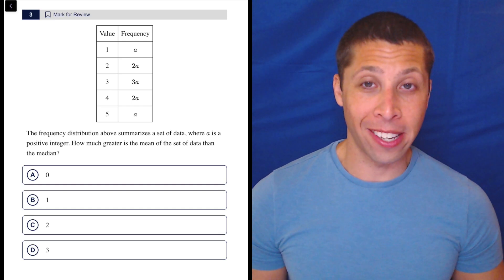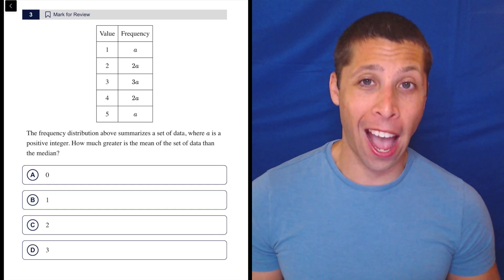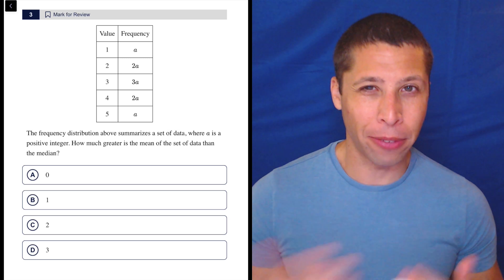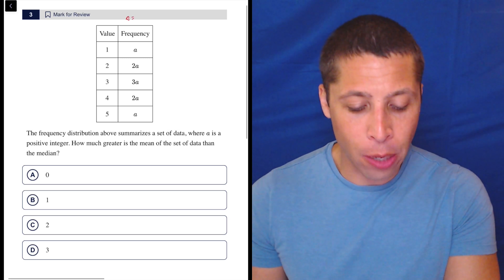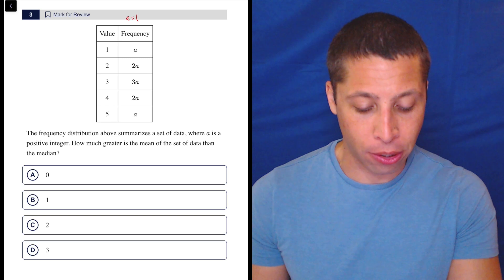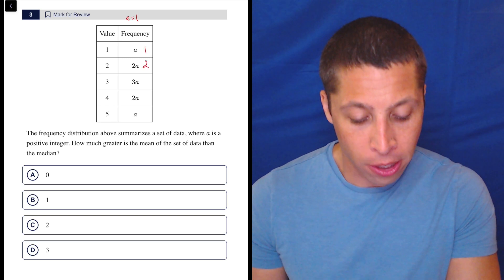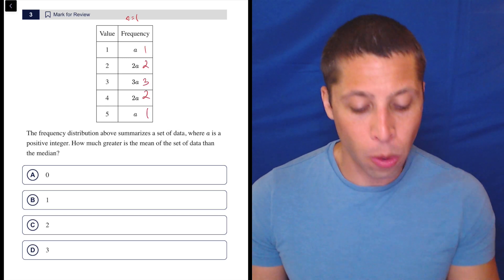The first thing you need to be doing on a question like this is making the frequency chart look like an actual frequency chart. Do we ever have frequencies of A? No, that doesn't make any sense. But if we just make A equal to 1, suddenly this thing makes a lot more sense. The frequencies are 1, 2, 3, 2, and 1.